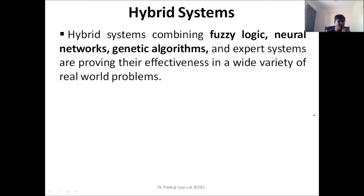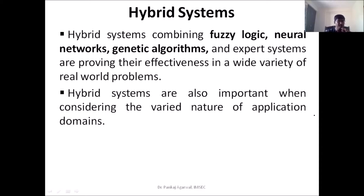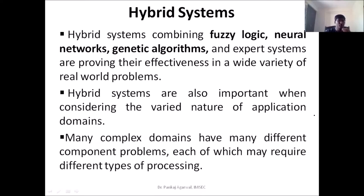In some cases, fuzzy logic seems to be more powerful, especially when we have to deal with uncertainties. Neural networks can be more useful where learning and training is involved — they talk about automated learning. Similarly, genetic algorithms are very good at searching and optimization. We can use these technologies while solving complex real-world problems, and the problems we talk about can have varied nature of application domains with varied requirements.